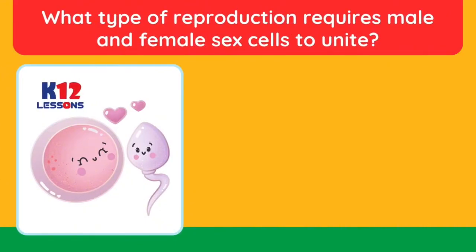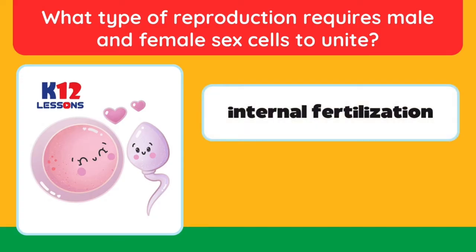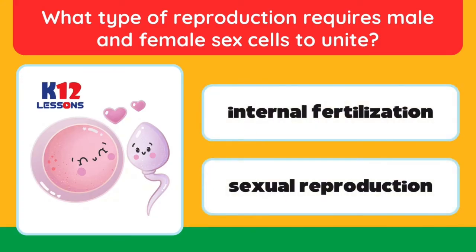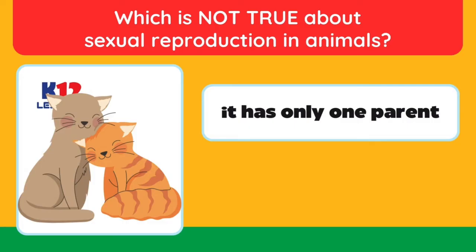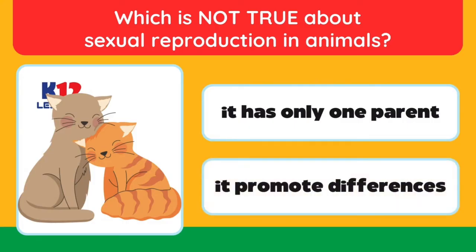What type of reproduction requires male and female sex cells to unite? Internal fertilization. Sexual reproduction. — Which is not true about sexual reproduction in animals? It has only one parent. It promotes differences.